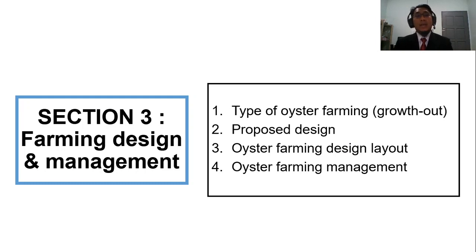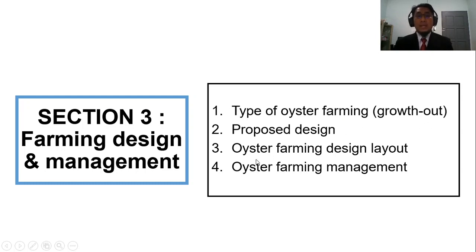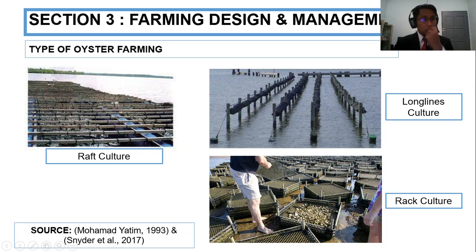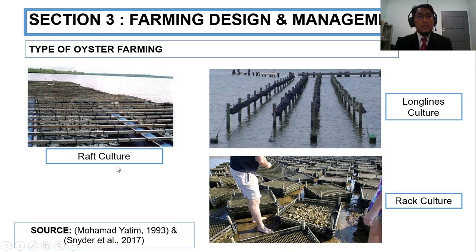Now I go to section three regarding farming design and management, which covers types of oyster farming. I focus on the proposed design, farming layout, and oyster farming management. According to Mad Yatim, there are three common oyster farming methods: number one is rack culture, the second is long-line culture, and the third is tray culture.